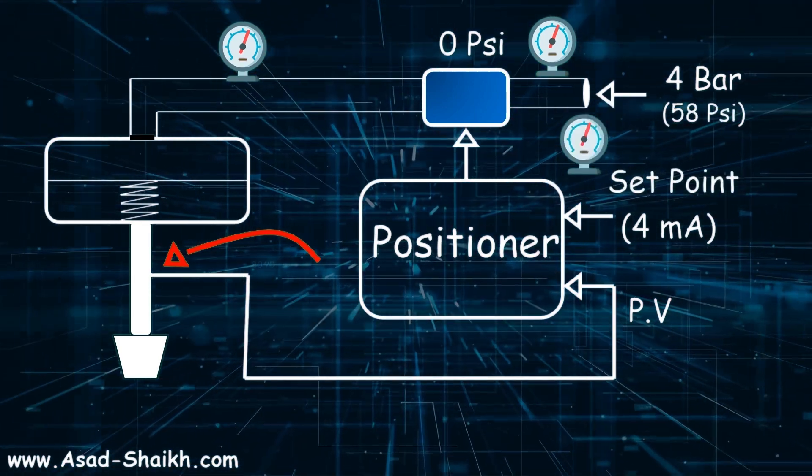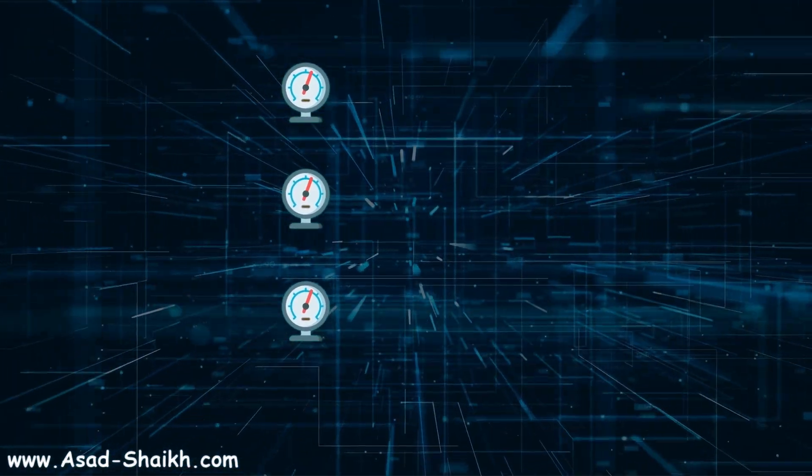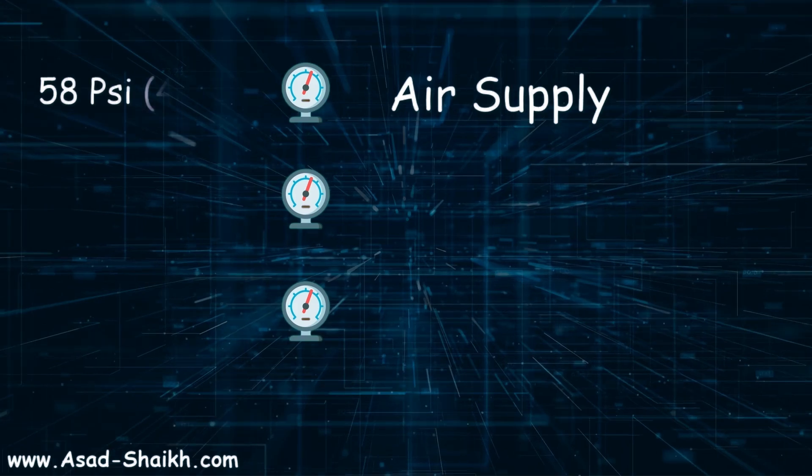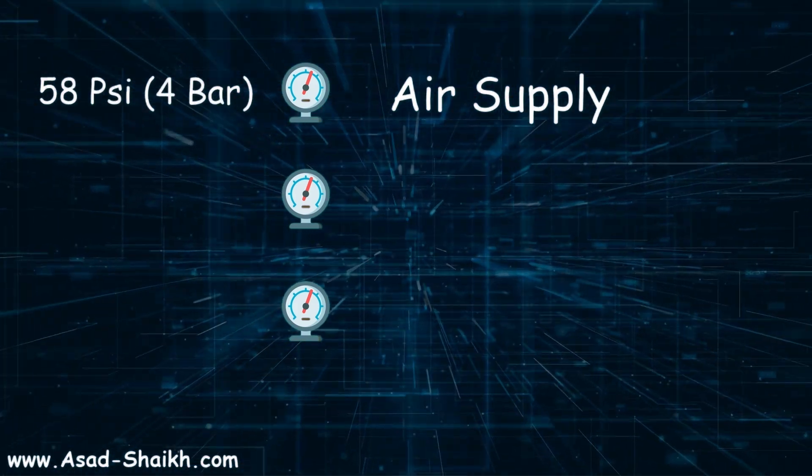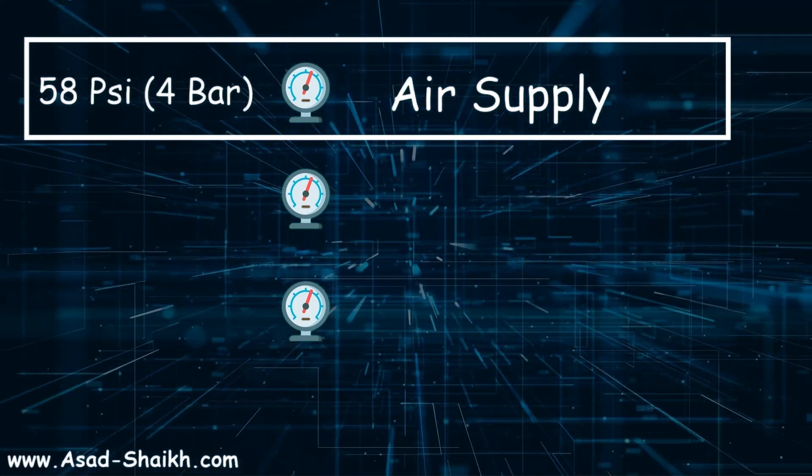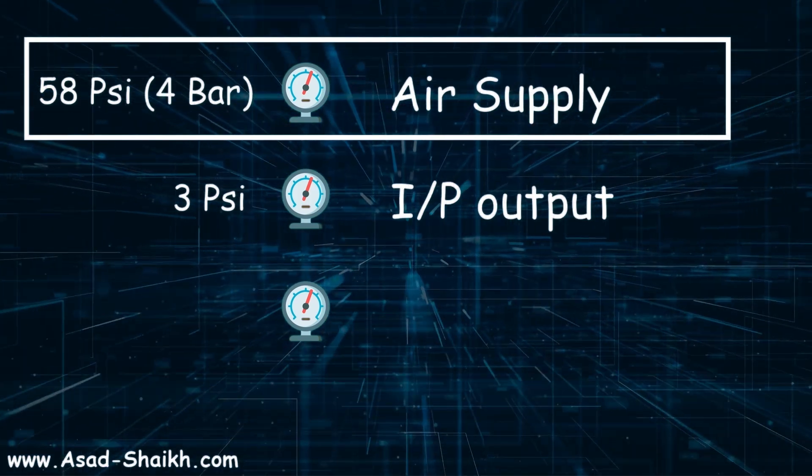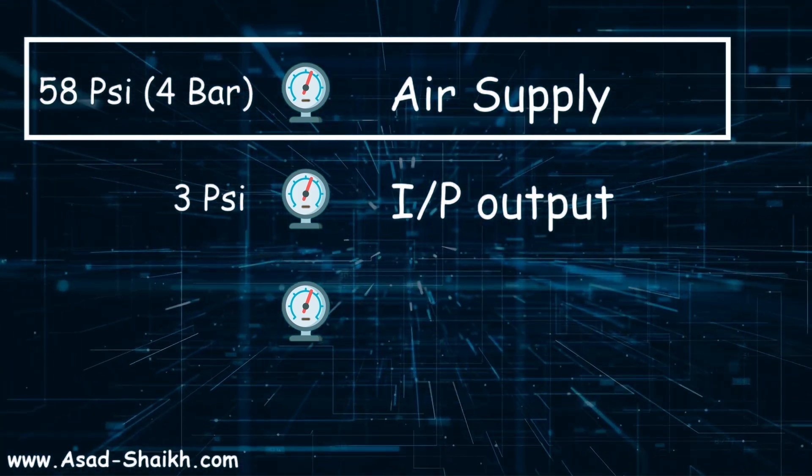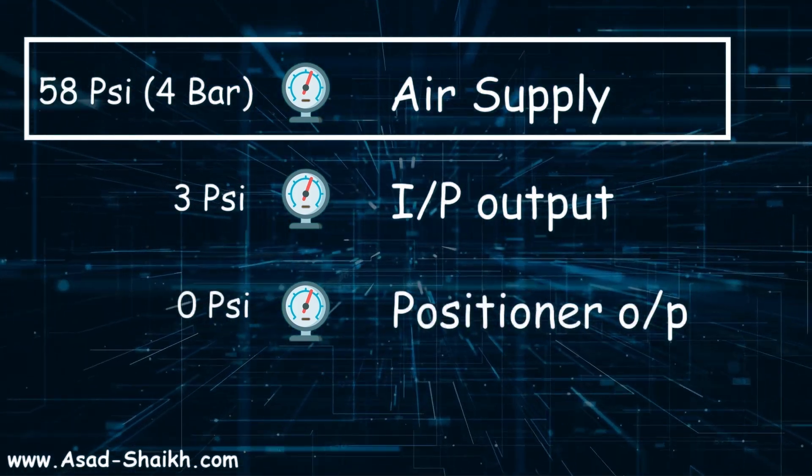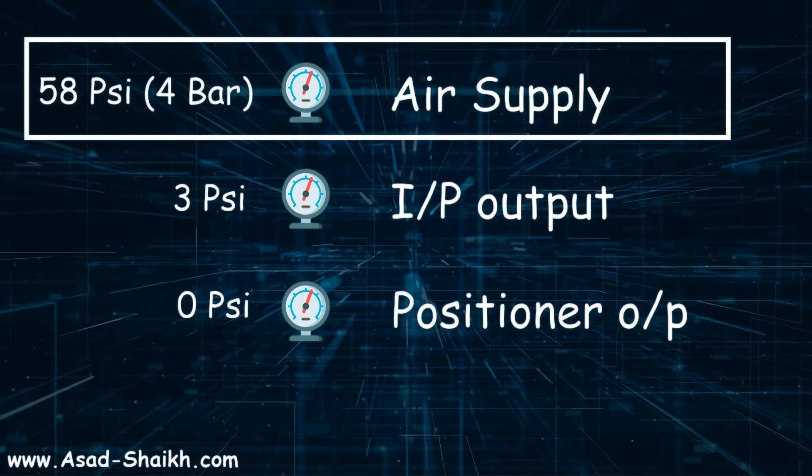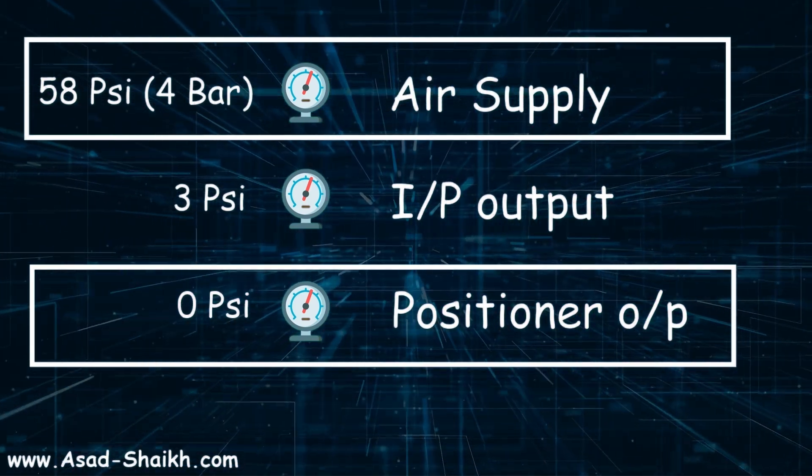Let us try to understand how this will help you. You get to the plant and you realize your control valve is not working. The first thing you check is, is the air supply proper? If the first gauge is showing you 58 psi or 4 bar, that means the air supply is good enough. Then you check, is the I/P working or not? For example, if the output shown is 3 psi for a 4 milliampere signal, that means your I/P is working properly. Then you get to the third point: is the positioner giving the correct output or not? And that is how you can troubleshoot a lot of issues that can happen in any control valve.